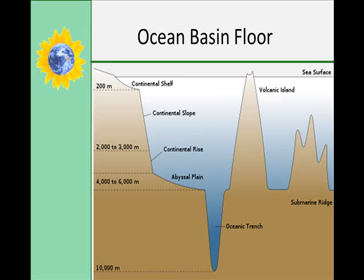The basin includes the abyssal plains, trenches, and volcanic features such as seamounts and guyots. They include approximately 30% of the Earth's surface. The deep ocean trenches are long, narrow canyons that form at convergent plate boundaries and form the deepest parts of the ocean. The Challenger Deep in the Mariana Trench has been measured at 11,022 meters deep. The abyssal plains are extremely flat and deep, with a thick accumulation of fine sediments. The Atlantic Ocean has the thickest accumulation of sediments because it has no trenches to catch and carry the sediments away.